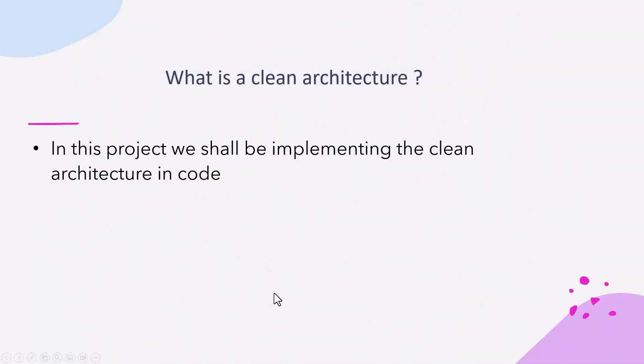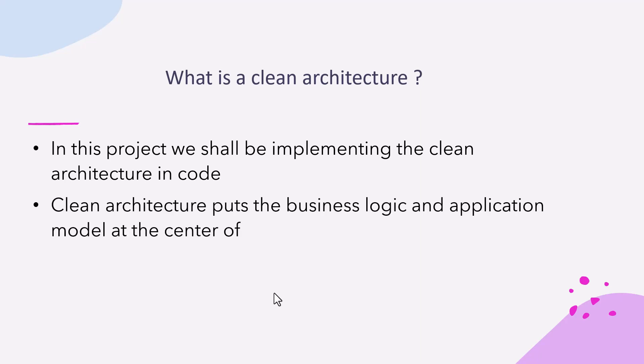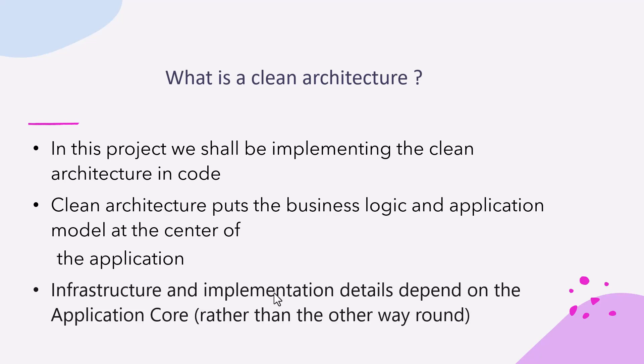What is clean architecture? Let's start with the definition. This project will be implementing clean architecture in code. Clean architecture puts the business logic and application model at the center of design. Infrastructure and implementation details depend on the application core rather than the other way around. This is also known as inversion of dependency.